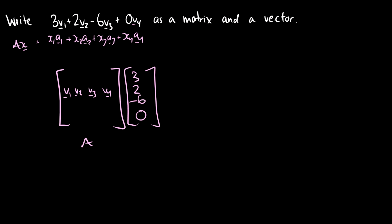And if we do our dot product rule, then we get back 3v1 plus 2v2 minus 6v3 plus 0v4. So yes, this is in fact correct. So this is how you reverse engineer your matrix vector equation.